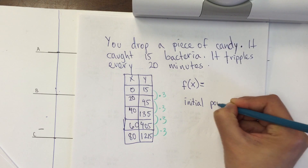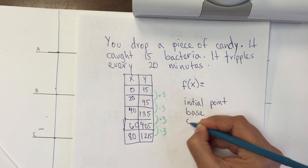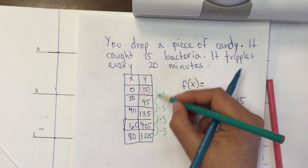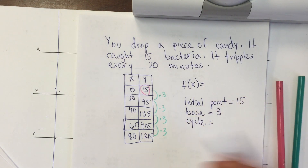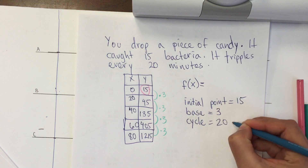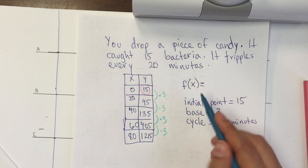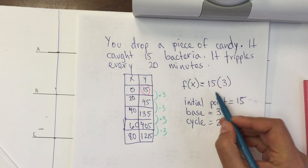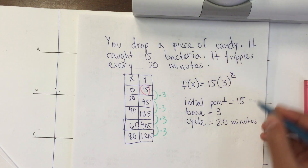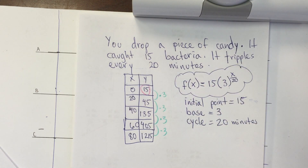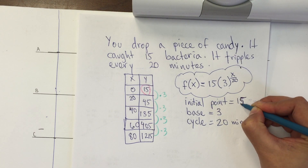Start by finding the initial point, the base, and the cycle. The initial point is 15. The base is the repeated pattern, so it's 3. The cycle is how often it triples — every 20 minutes. So for the exponential function, you write: 15 times 3 raised to x over 20. That's how my exponential function would be written. That concludes today's lesson. I hope you are able to understand it — thank you so much, bye-bye!